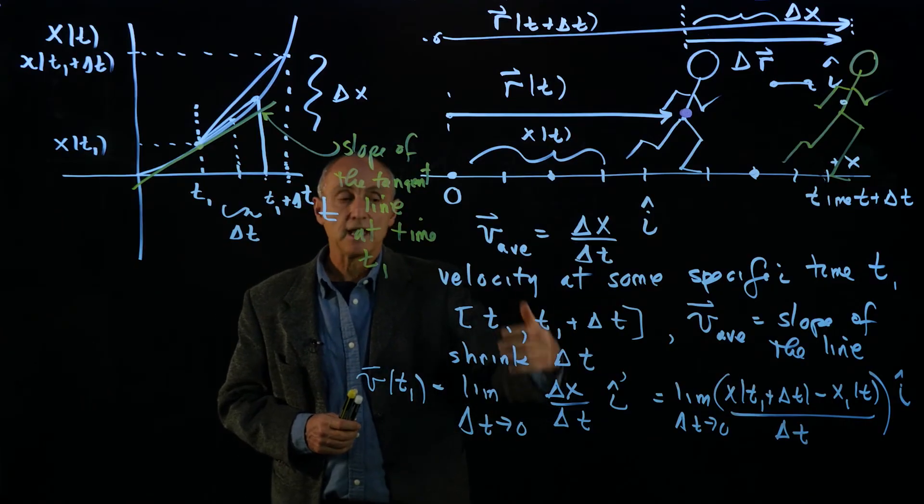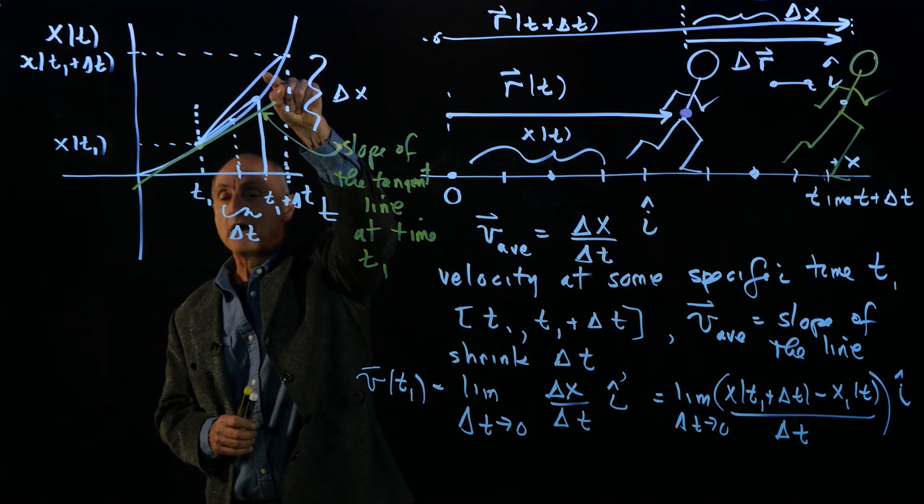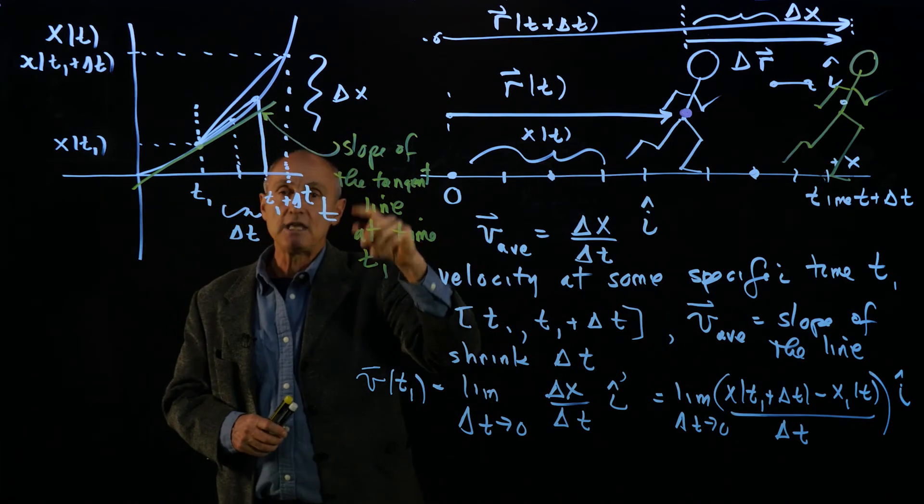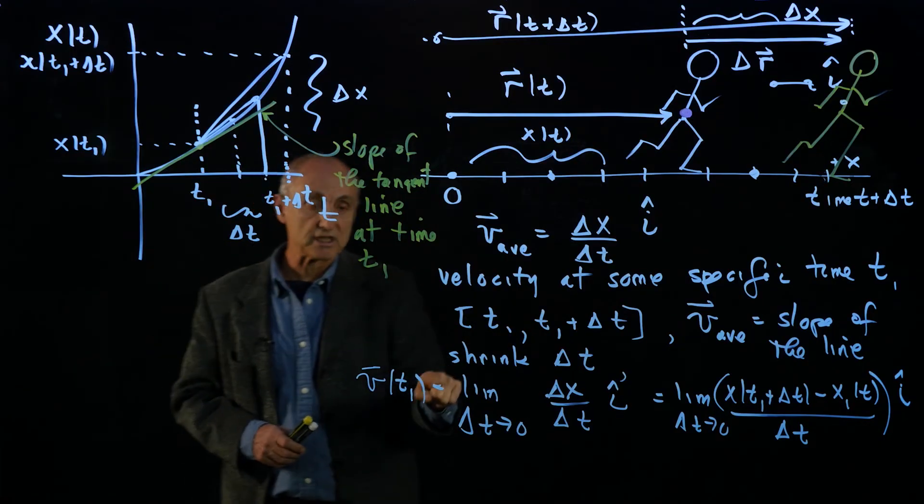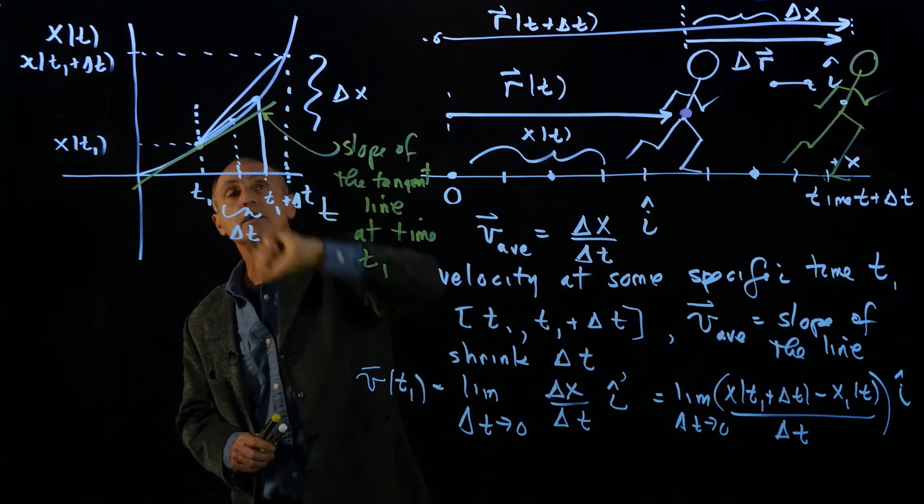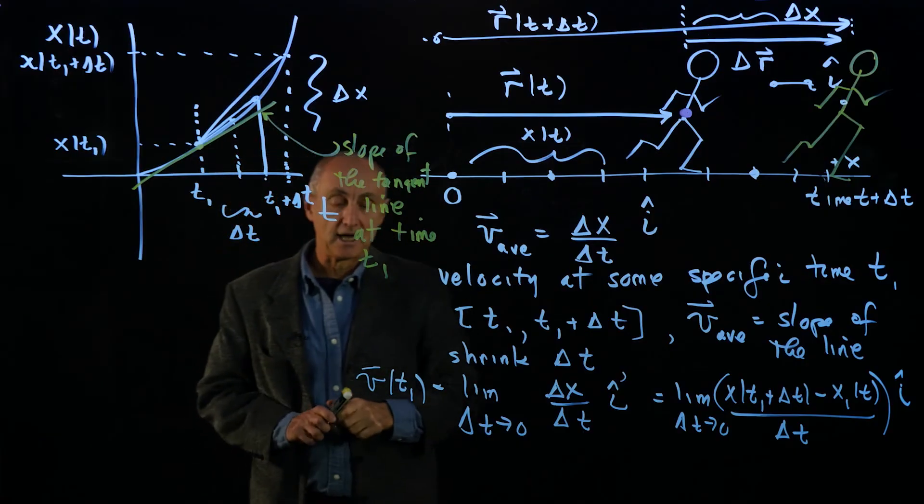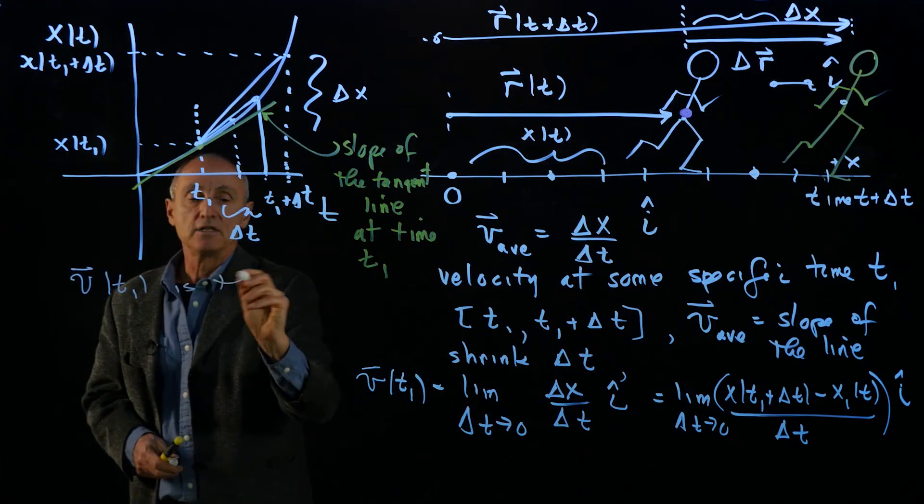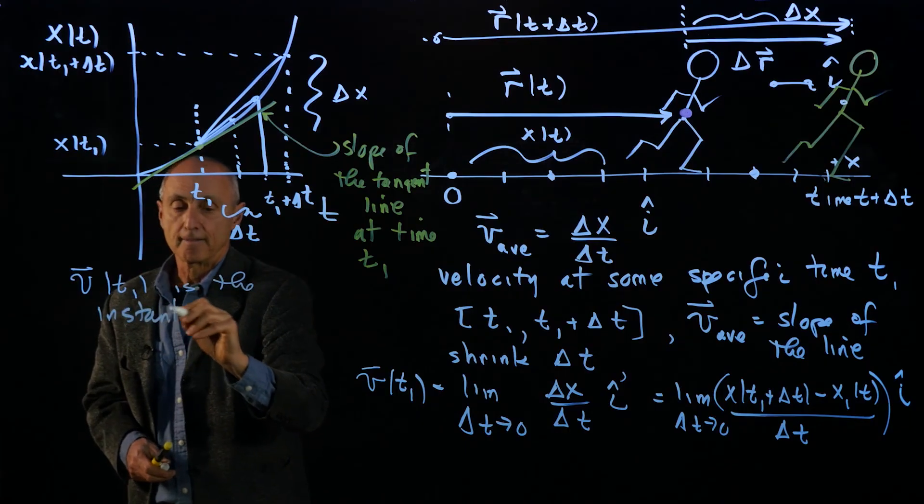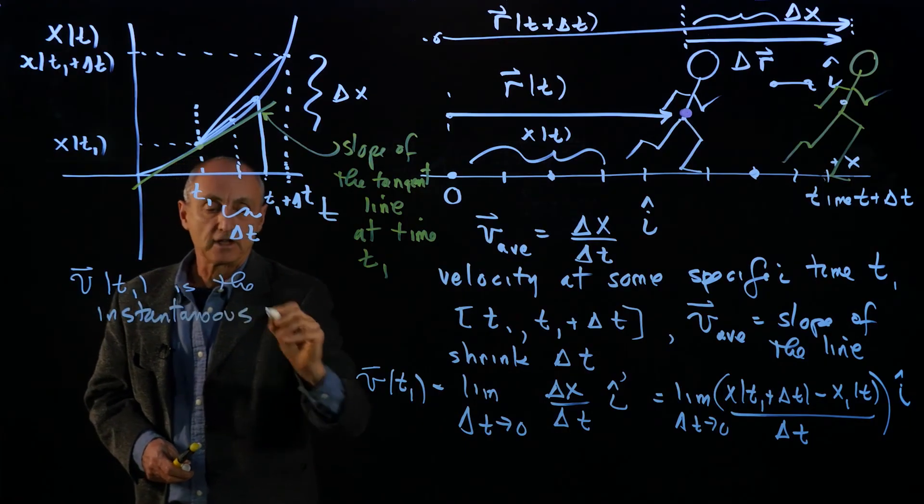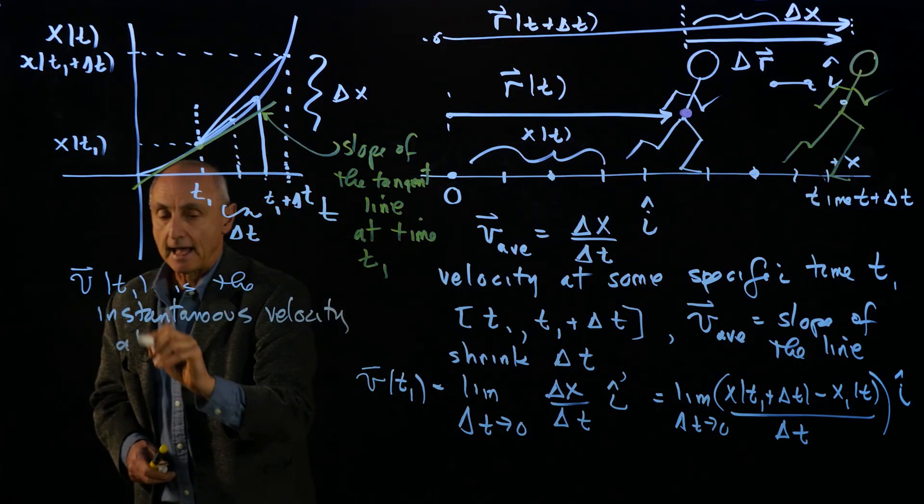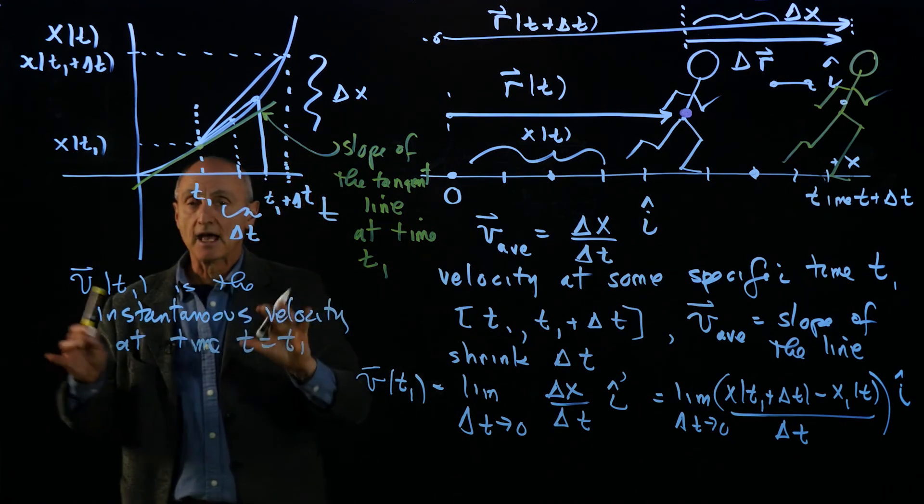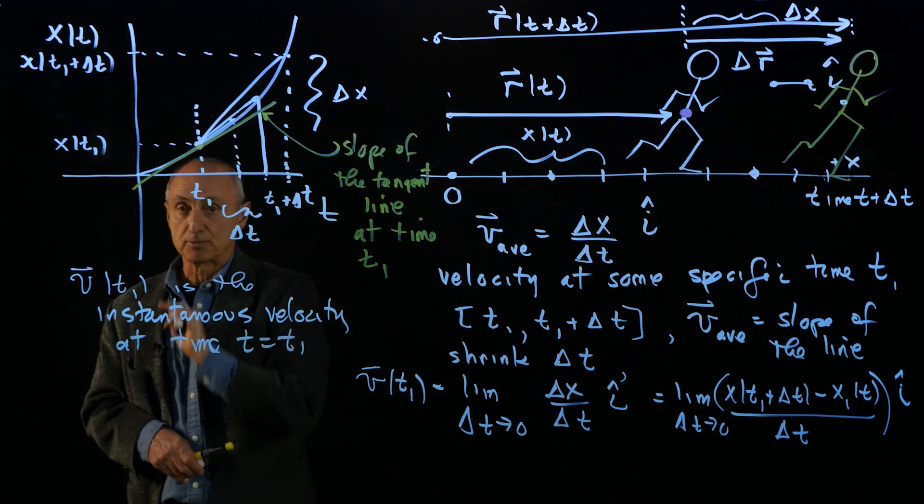So we take a fixed delta t, we calculate the slope. We take a smaller delta t, calculate the slope. And each time we do that, the slopes represent a sequence of numbers. And the limit of that sequence, you can see graphically, is the slope of the tangent line at time t1. And so what we say is, v of t1 is the instantaneous velocity at time t equals t1. And that's how we describe instantaneous velocity at some specific time.